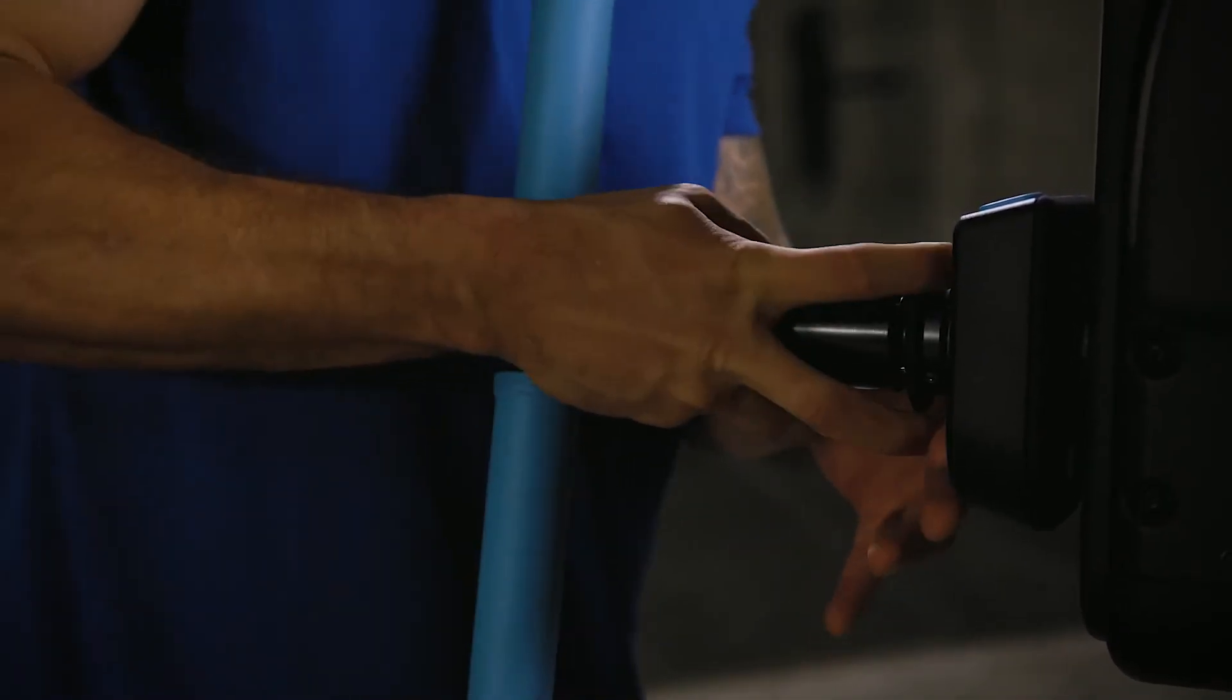Now we will cover how to connect and remove attachments. To connect an attachment, push the attachment all the way in and then pull back on the latch until you hear a click.